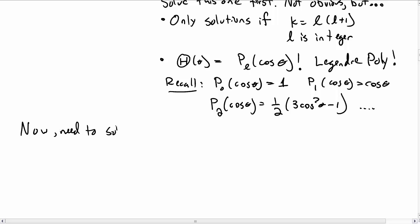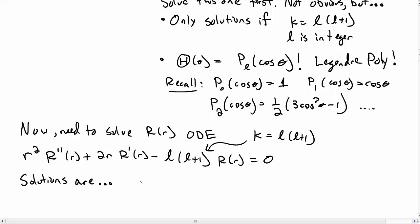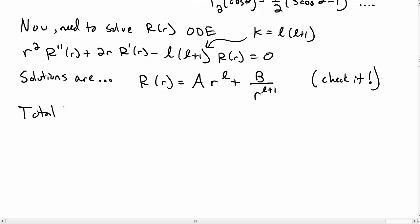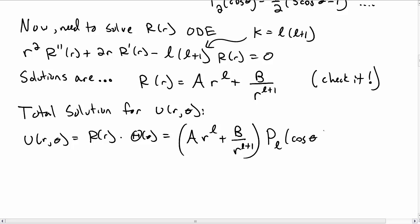Now we need a solution to the r equation. With k = l(l+1), it becomes: r²R″ + 2rR′ − l(l+1)R = 0. The solutions are R(r) = ar^l + b/r^(l+1). You can check that these are indeed solutions. So the total solution u(r, θ) is the product of these two: u = [ar^l + b/r^(l+1)] · P_l(cosθ). This holds for any l, and since the equation is linear we can take a sum of solutions over all l.